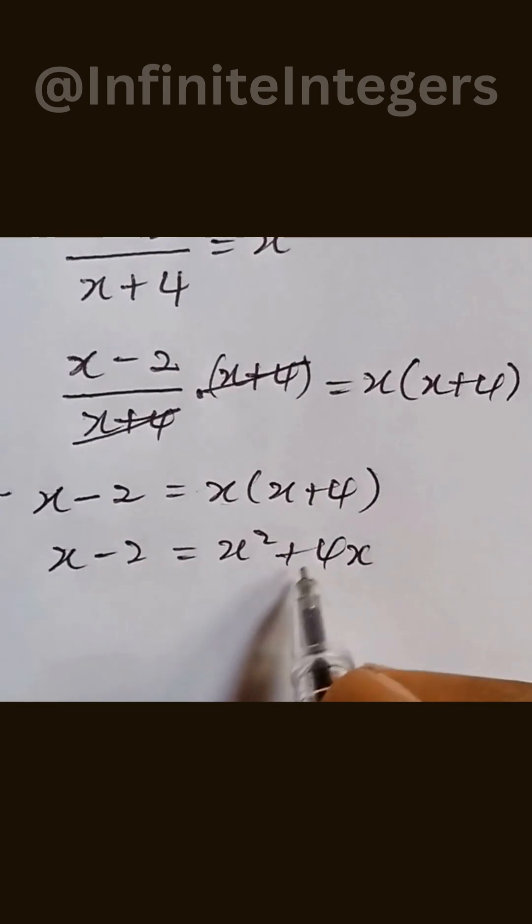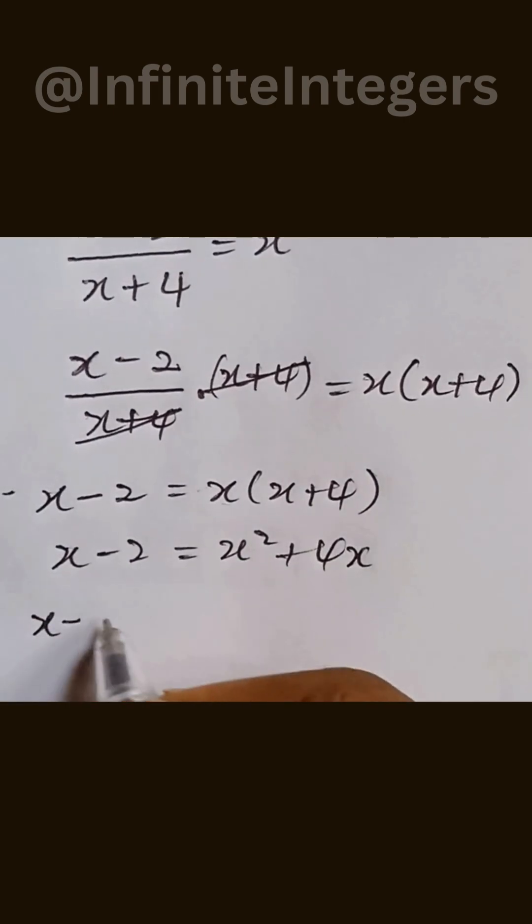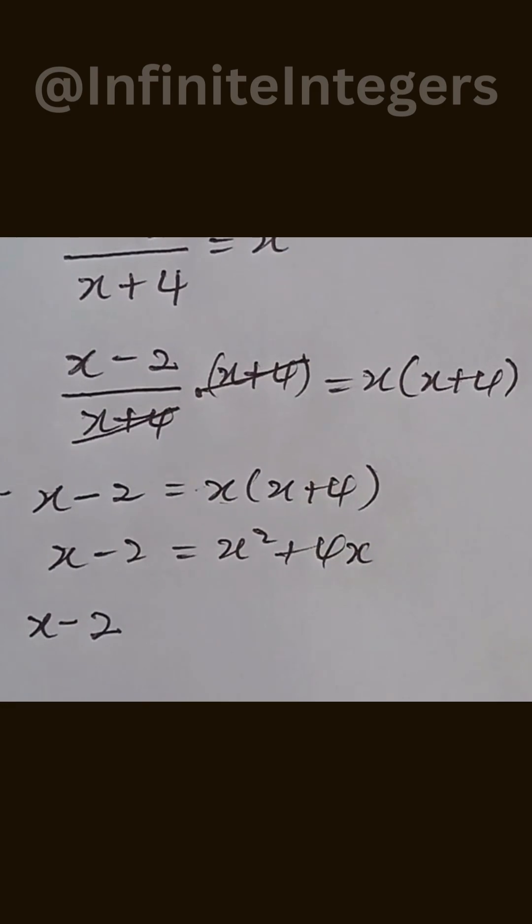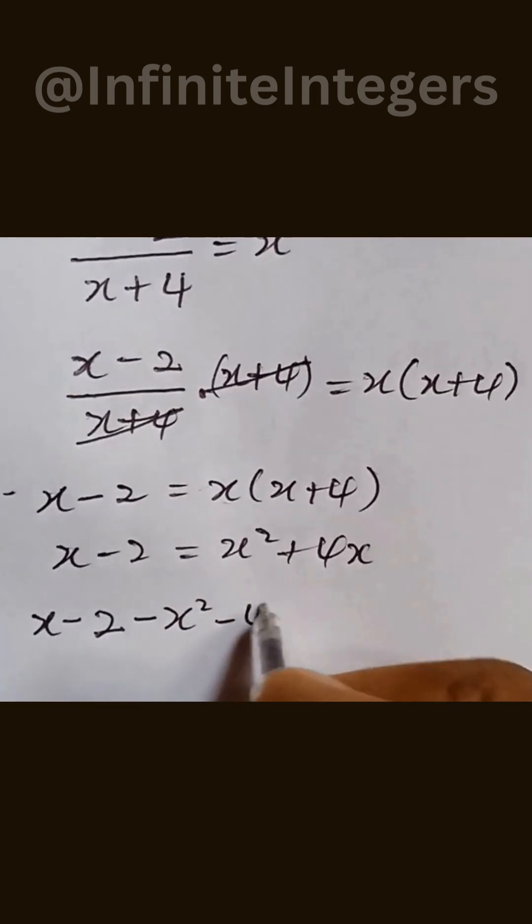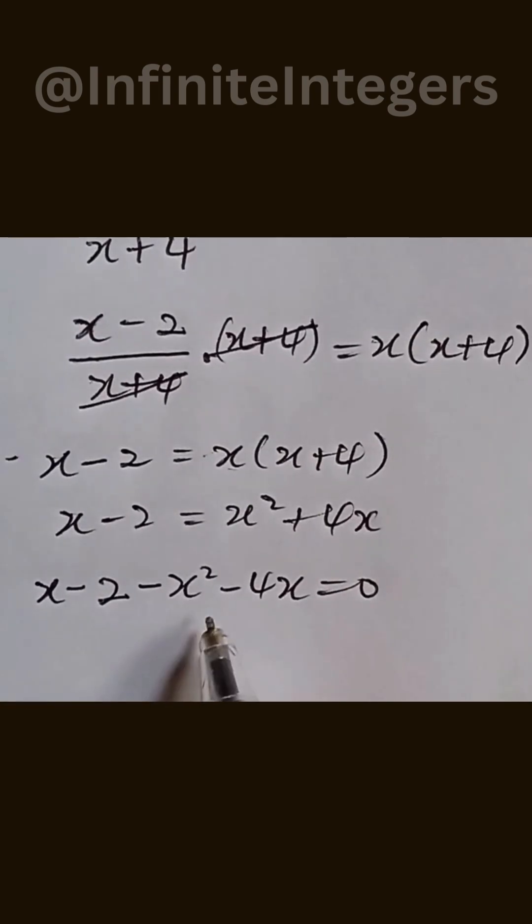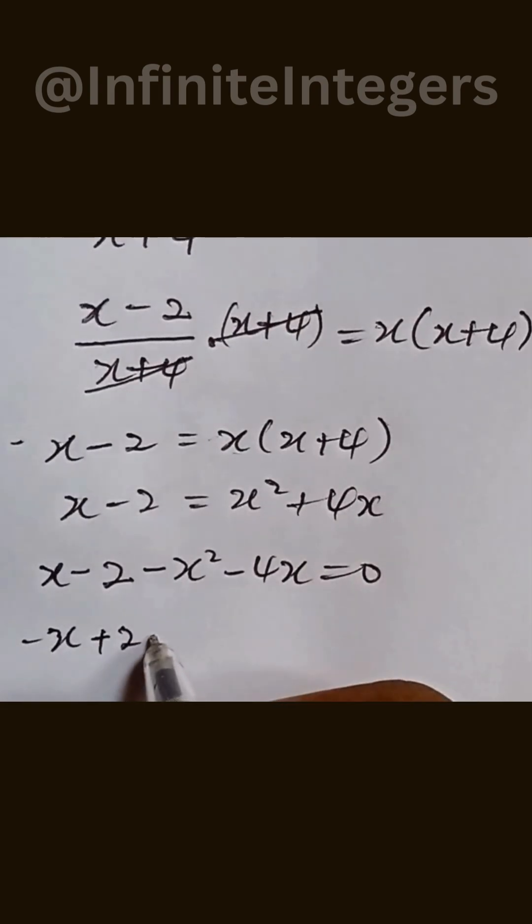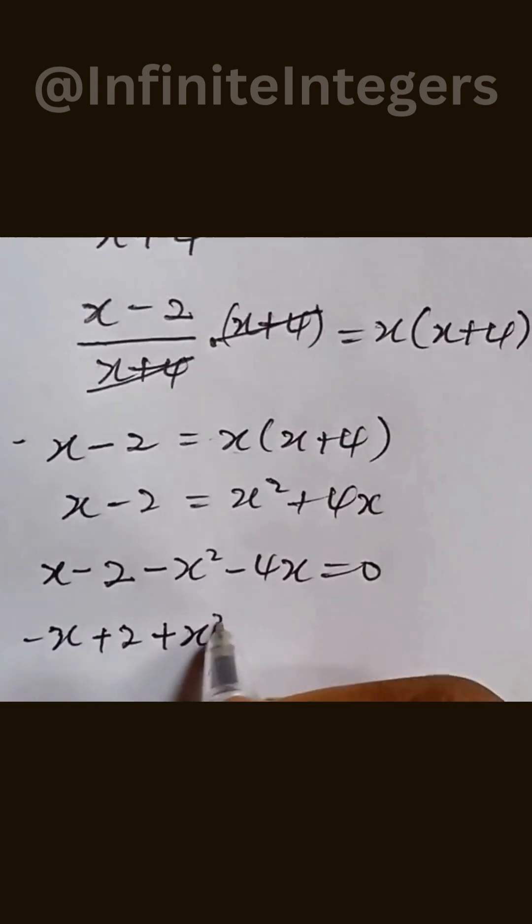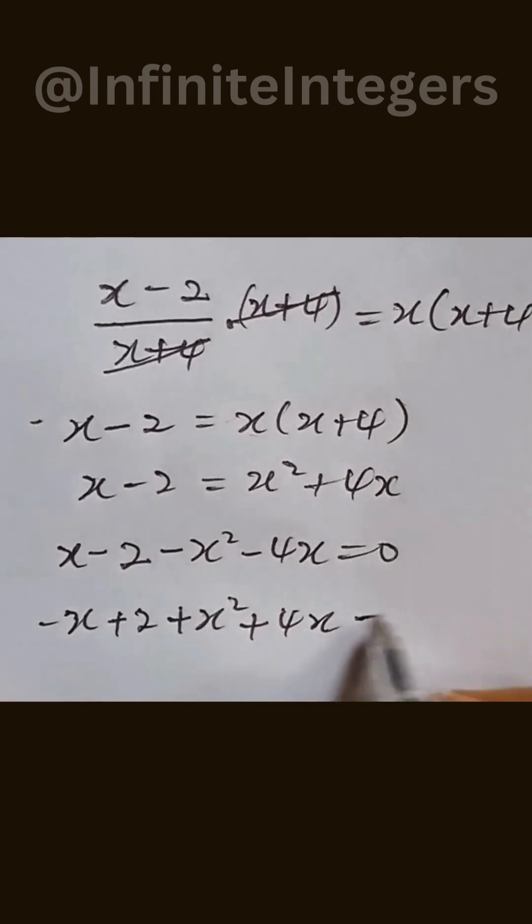Now we can move the right hand side to the left hand side. So we have x minus 2 minus x squared minus 4x, everything equal to 0. If we multiply all by minus we have minus x plus 2 plus x squared plus 4x equal to 0.